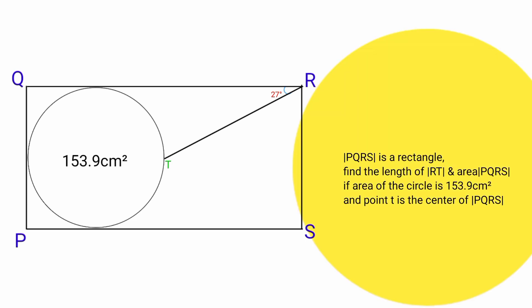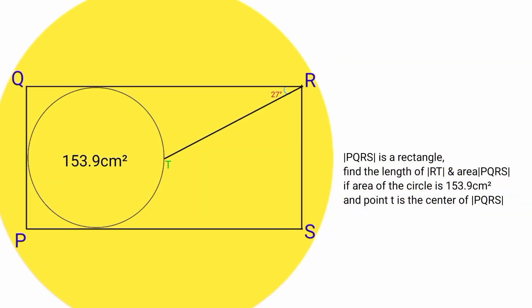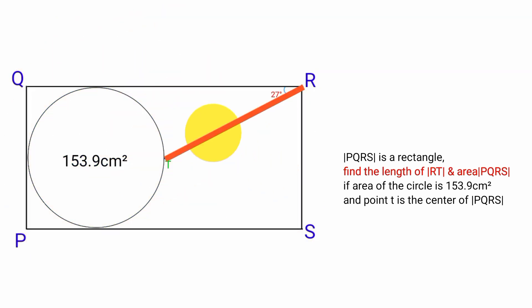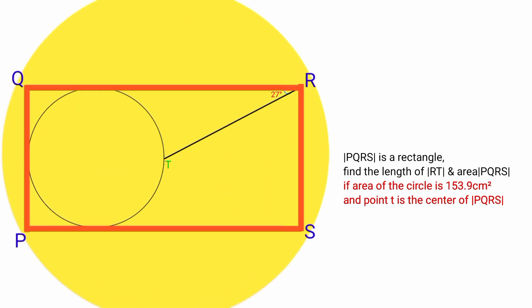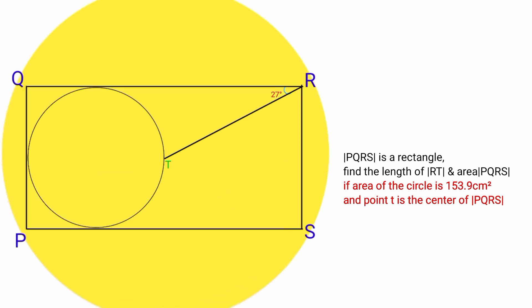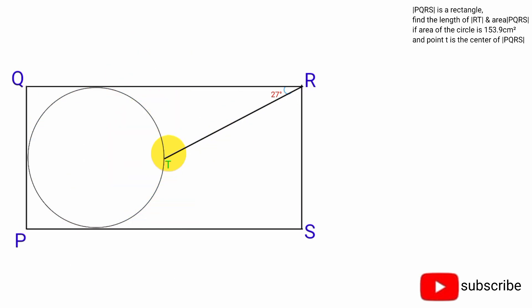This next question: quadrilateral PQRS is a rectangle. Find the length of line RT if the surface area of the circle is 153.9 cm squared and point T is the center of the rectangle PQRS. Since point T is the center of the rectangle, if we draw a line parallel to side PS through point T, it bisects it.